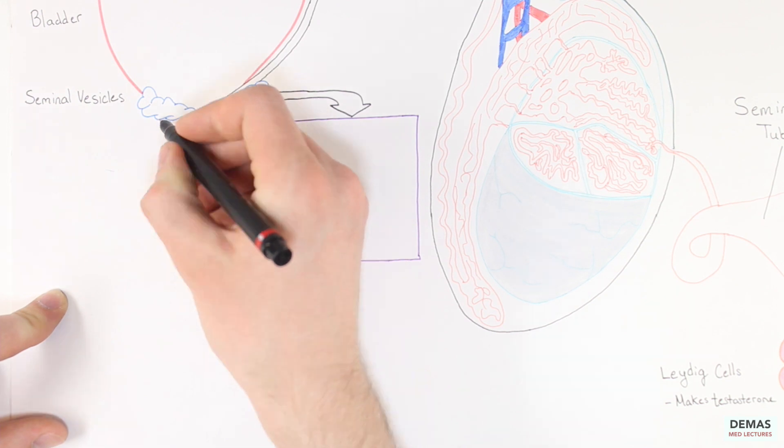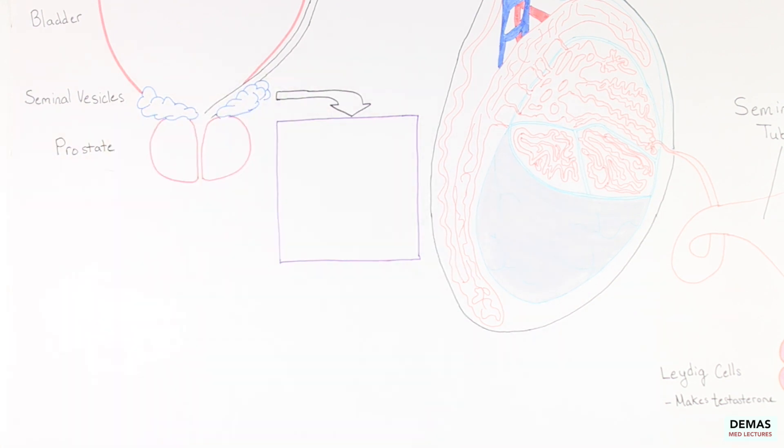The progressing sperm then enter the prostate through the ejaculatory duct. Within the prostate, additional secretions are added to the seminal fluid, which makes the semen sugary and alkaline. These secretions protect and provide nutrition to the sperm.